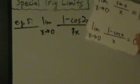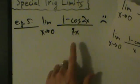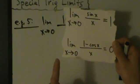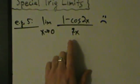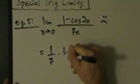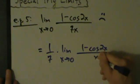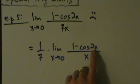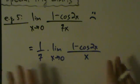This looks like the special trig limit for cosine: 1 minus cosine x over x approaches 0. The difference is here we have x, x, and x, but in the given problem we have 2x in the cosine, 7x in the denominator, and x approaching 0. Let's algebraically manipulate to match the form. Avoid using double-angle formulas — that would make things very complicated.